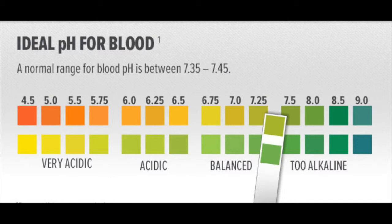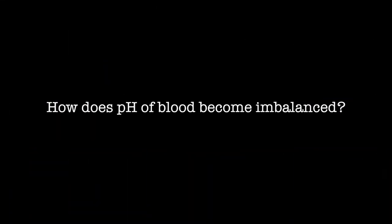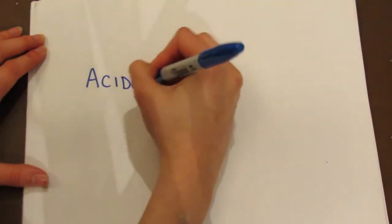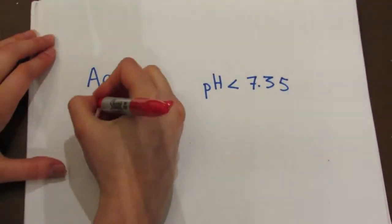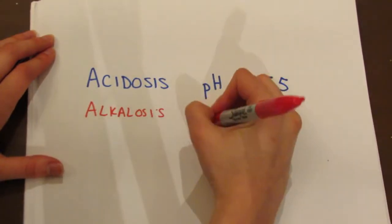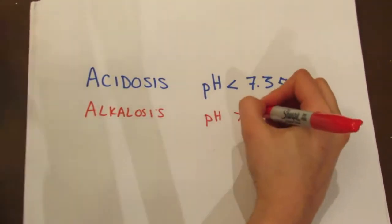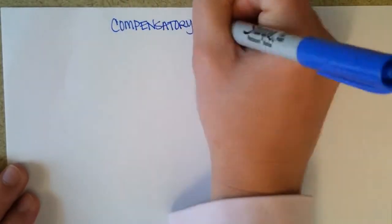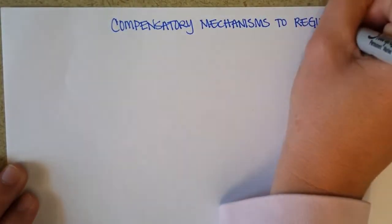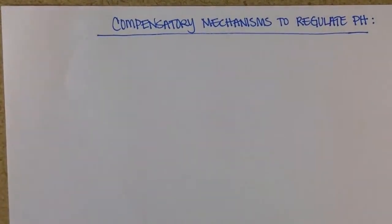Ideally, the pH of blood is between 7.35 and 7.45. How does the pH of blood become imbalanced? There are two conditions to look at here. Acidosis is when the pH in blood is below 7.35. Alkalosis is when the pH in blood is above 7.45. When these conditions occur, the body will be unable to function and death may take place. But thankfully, there are compensatory mechanisms to regulate pH.